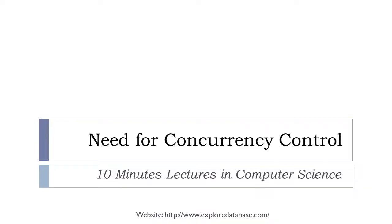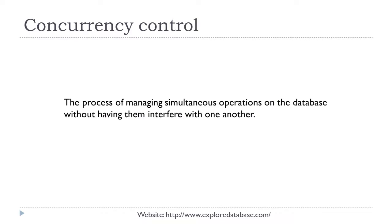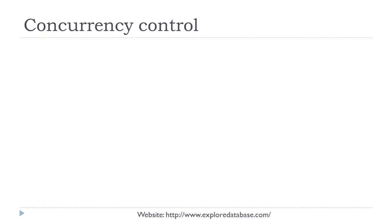Welcome back to 10 minutes lectures in computer science. In this lecture we are going to discuss about the purpose of concurrency control. Concurrency control is a process of managing concurrent operations on the database without having them interfere with one another. If we permit them to interfere with one another, they may end up in an inconsistent state.